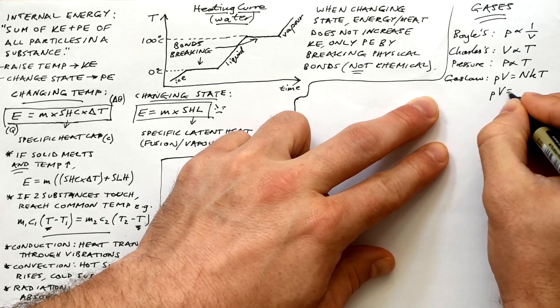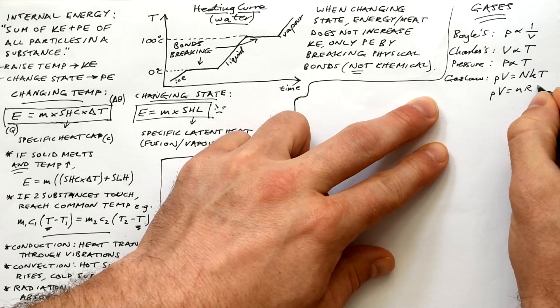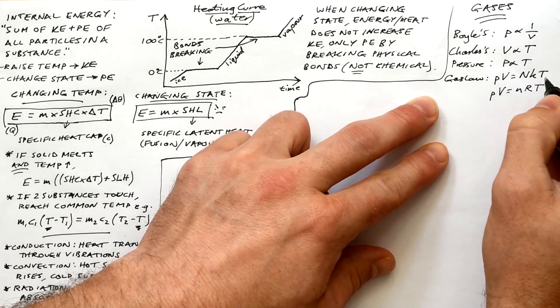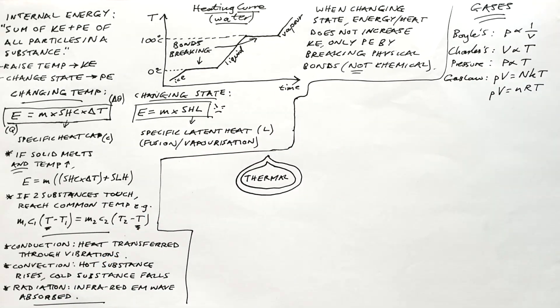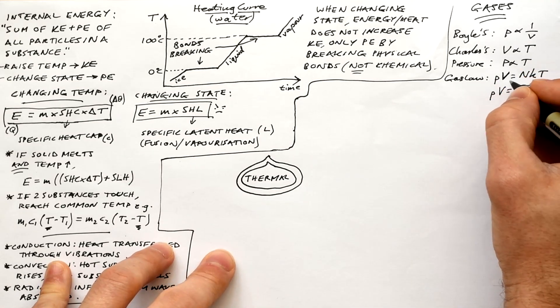Complete gas law is PV equals NKT or NRT. Big N, number of molecules, little n, number of moles. K, Boltzmann constant. R, gas constant. It's just converted from K. NRT is much easier to deal with because they're much nicer numbers, R being 8.31.